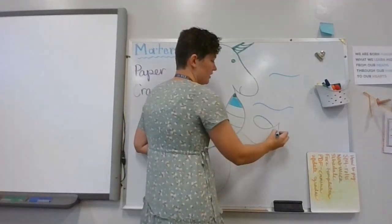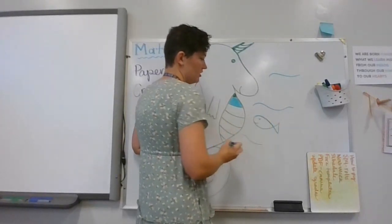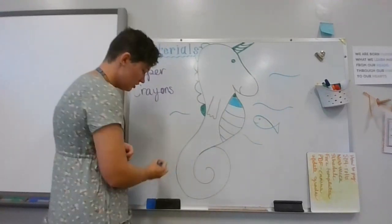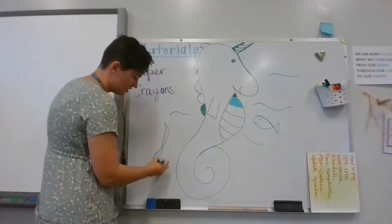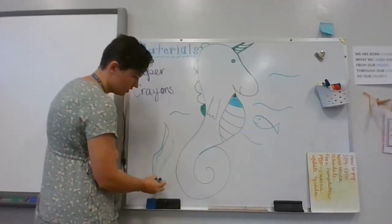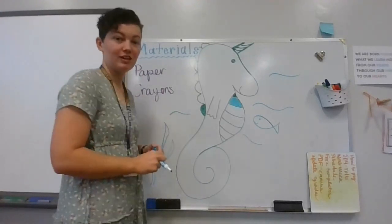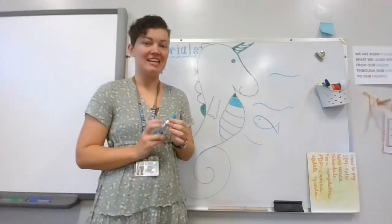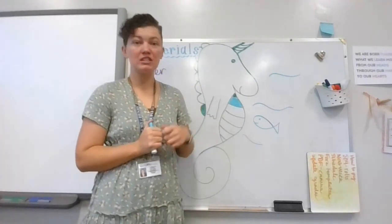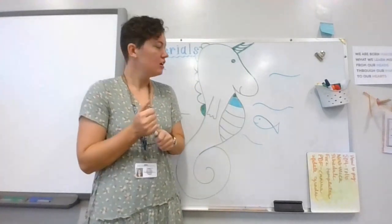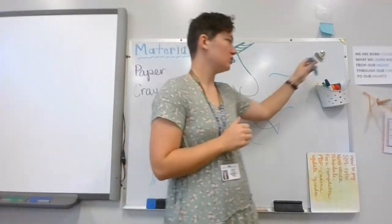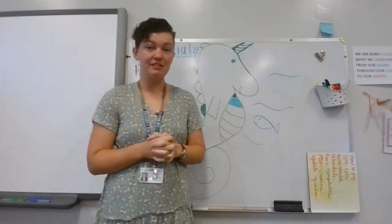You could add a shark, some seaweed down at the bottom, a starfish—you could even draw a castle, because if this is a sea unicorn, it's got to be really special. So you figure out what your sea unicorn looks like, what colors it has, and where it lives.